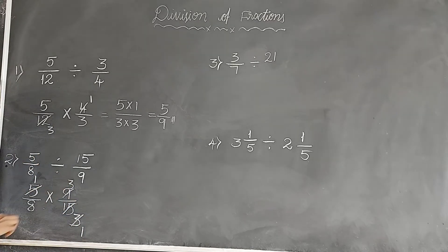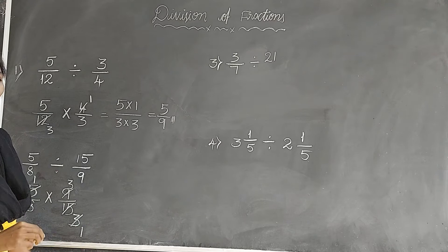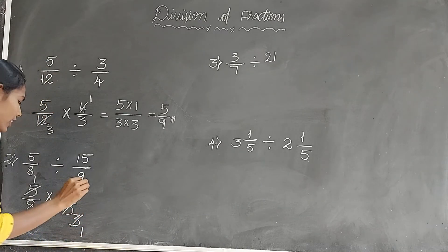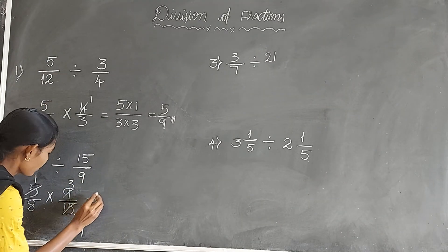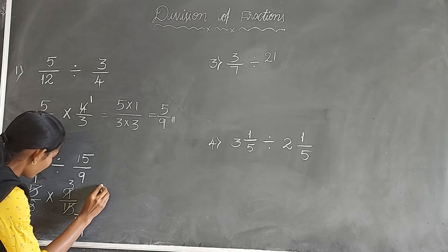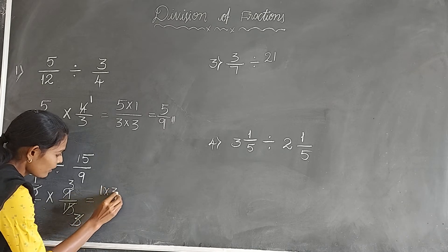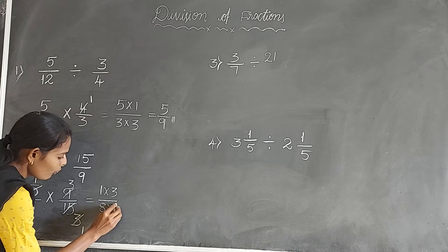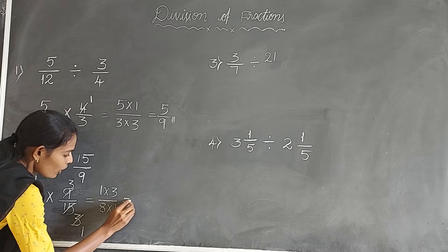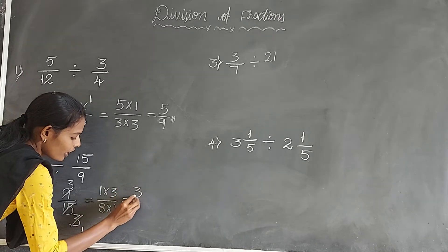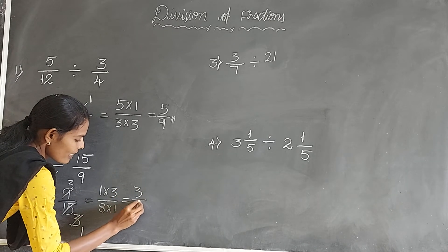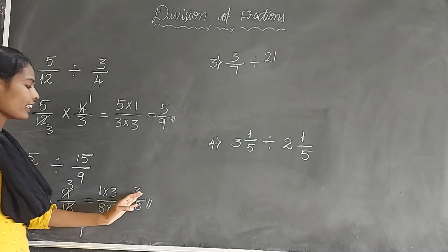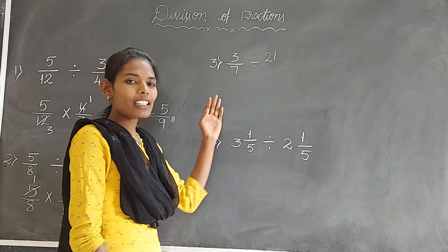3 cancels with 9. Now we multiply the numerators and denominators: 1 into 3 by 8 into 1. That gives 1 times 3 on top and 8 times 1 on the bottom. The answer is 3 by 8.